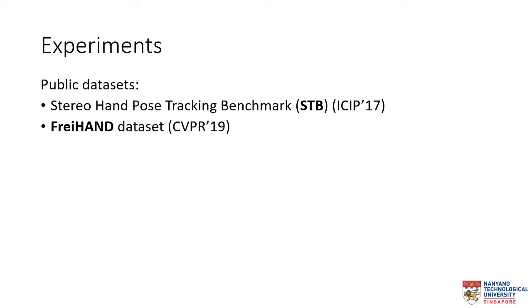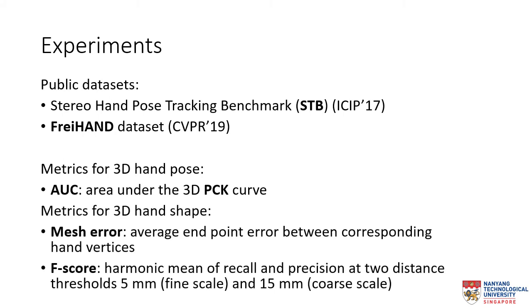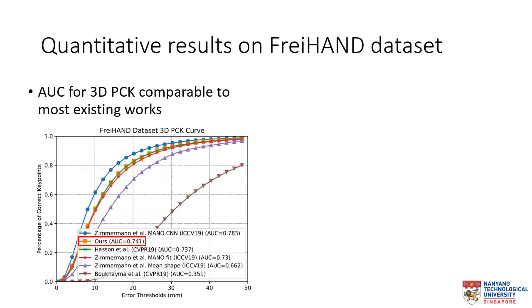We evaluated our method on two publicly available datasets. For the metrics for 3D hand pose, we use the area under the 3D PCK curve. To evaluate the 3D hand mesh, we report the mesh error and F-score at two different thresholds. The figure shows the results of 3D hand pose, where our PCK curve and AUC score are comparable with most of the methods, except for Mano-CNN.